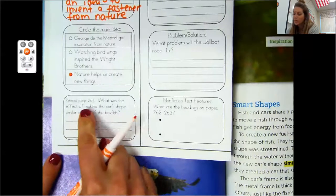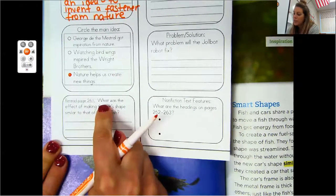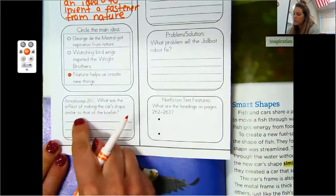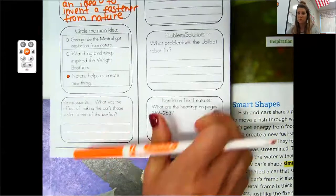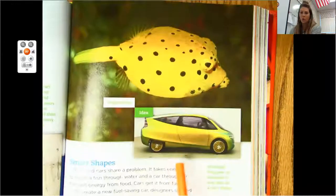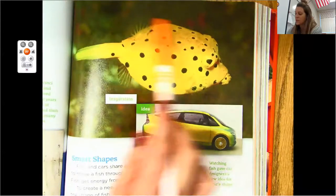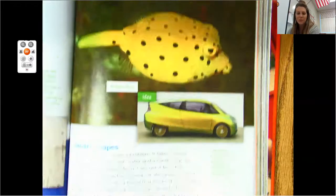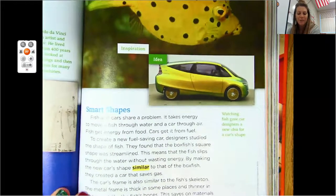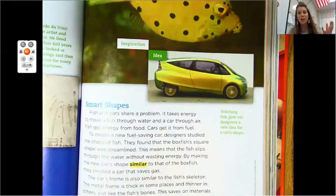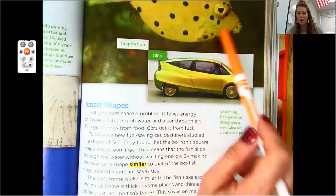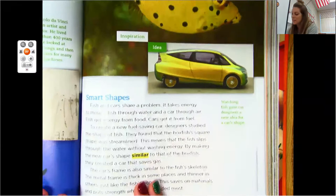Now they're wanting us to read page 261. And they want to know what was the effect of making the car shape similar to that of a box fish. What? I am very interested in this. I would have never thought that a car would be inspired by a fish. So here's our inspiration. Again, that common word. And then there's their idea. So let's think. What was the effect of making the car shape similar? So it's a cause and effect because they made the car like the box fish. We have to figure out what happened.